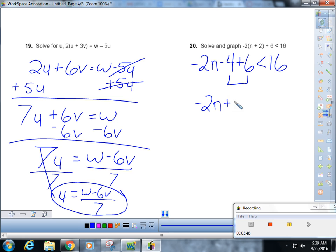Negative 2n is less than... Indeed, that is 14 and not 8, for those of you guys that caught that mistake on the answer key.